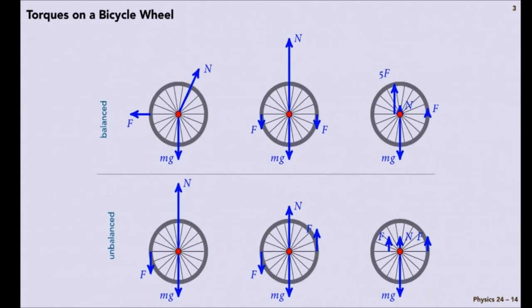Here are three examples where it isn't balanced. We have, again, gravity and the normal force. But we only have one force that provides a torque that will tend to make this wheel want to spin in the counterclockwise direction.